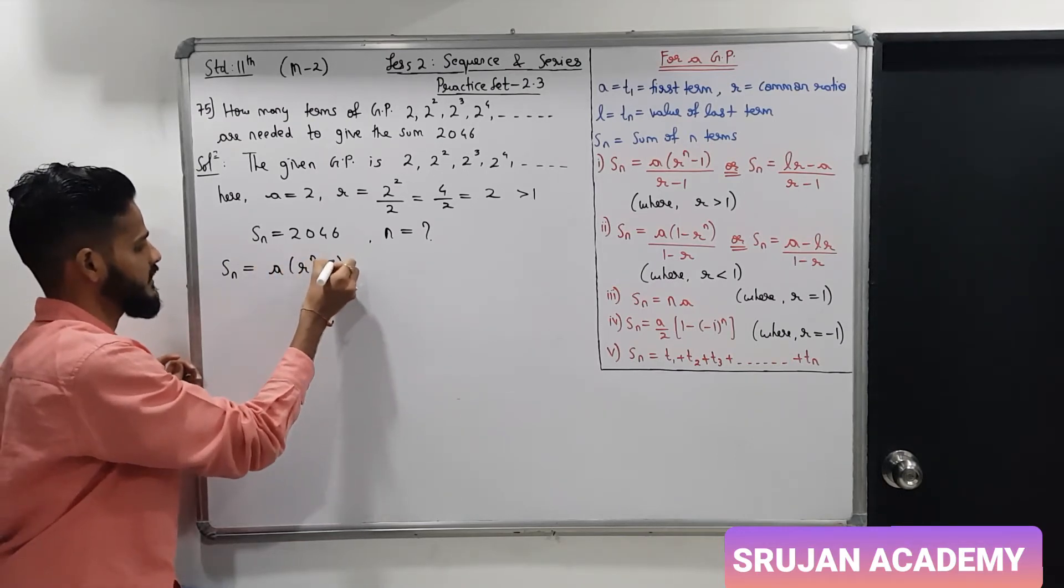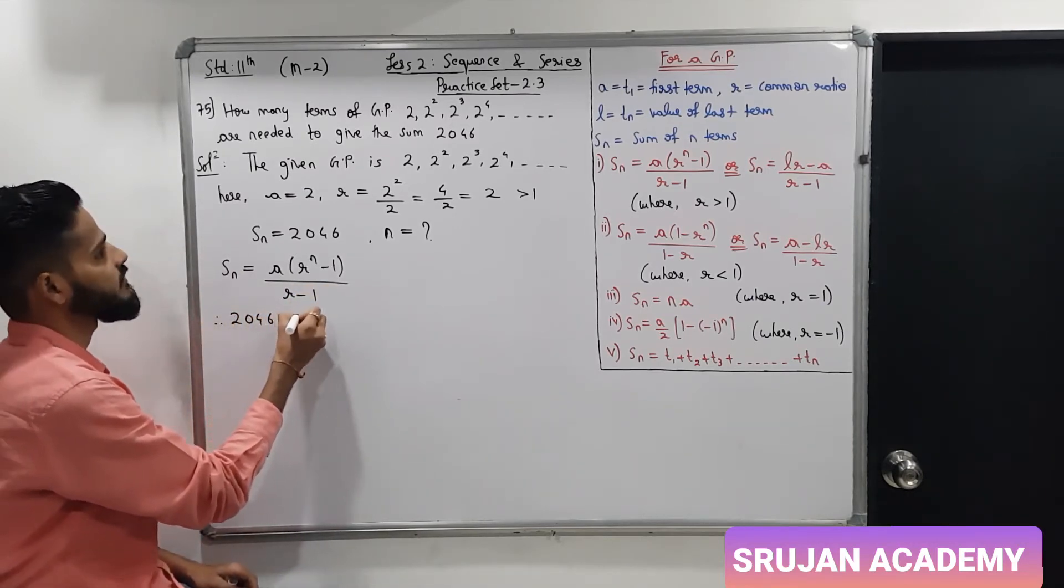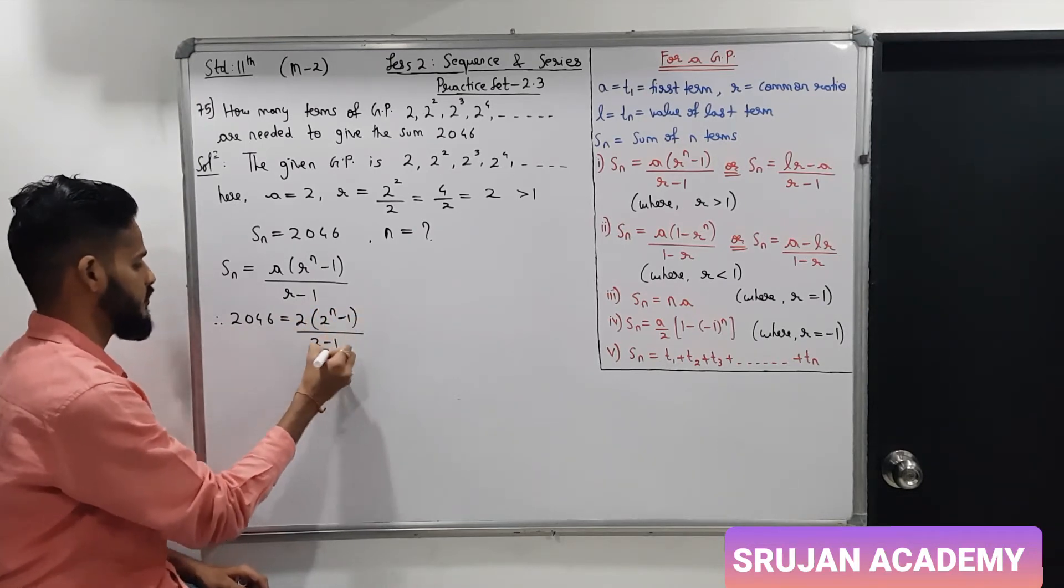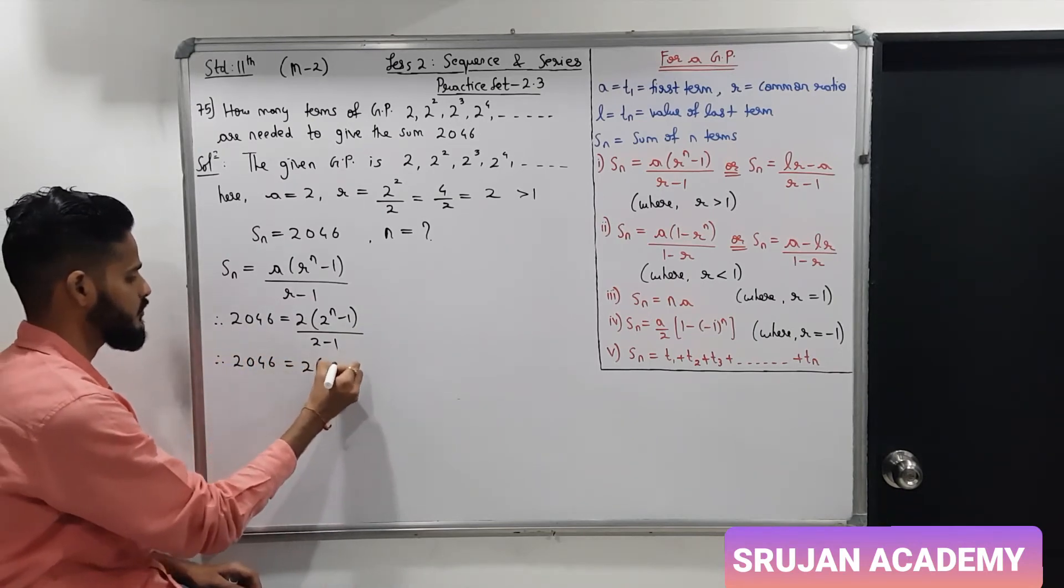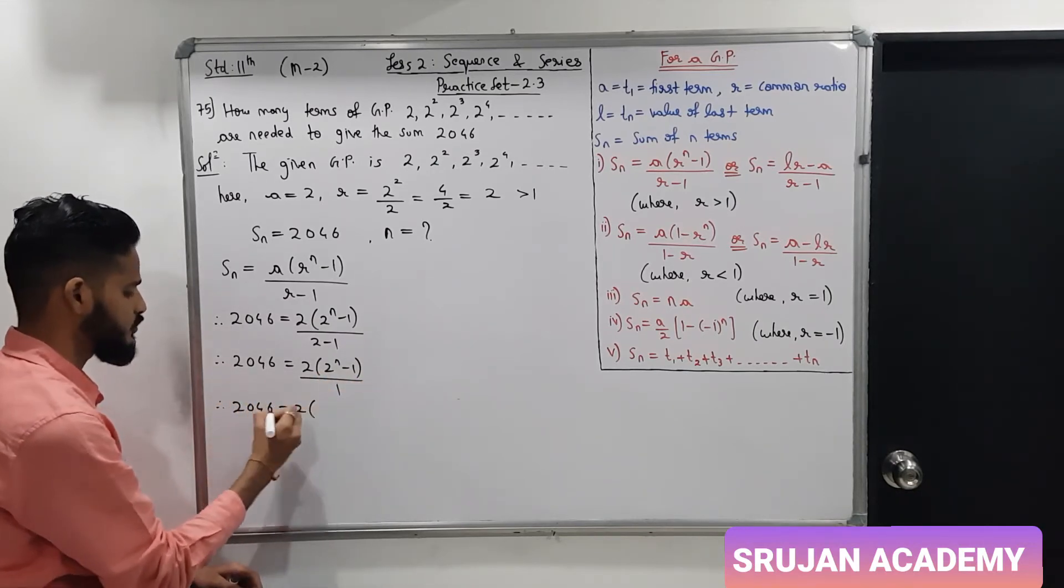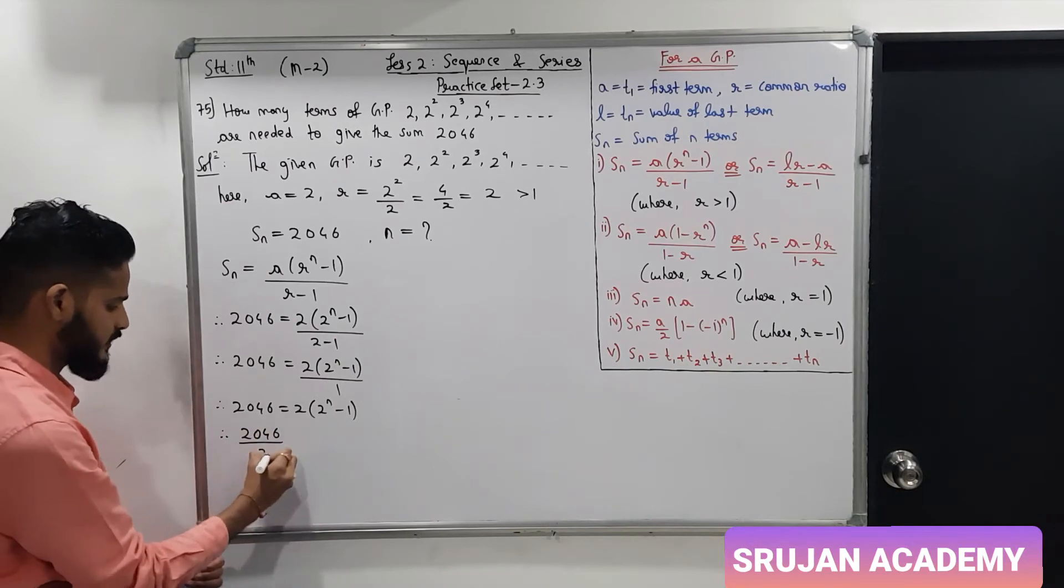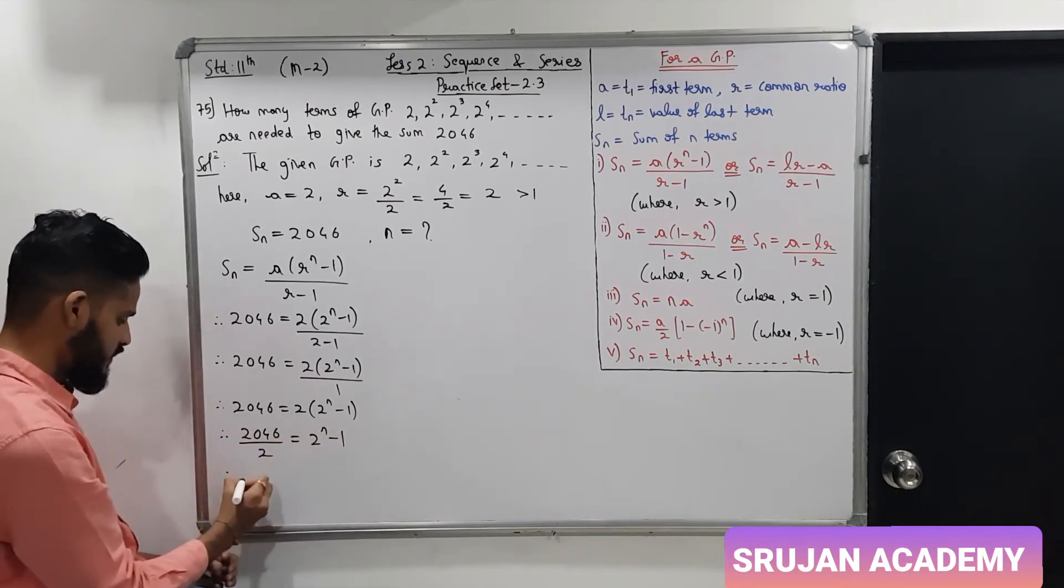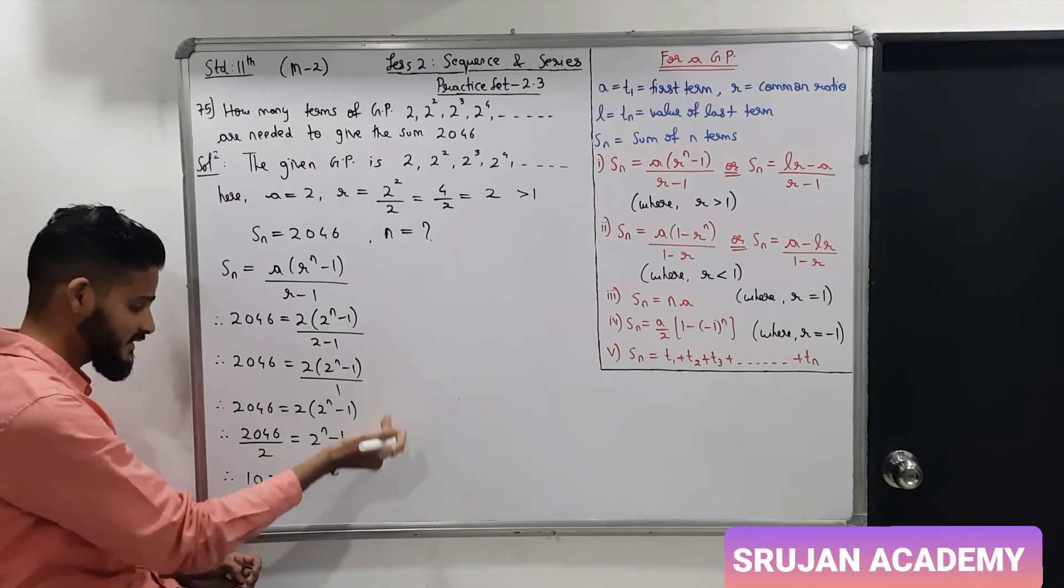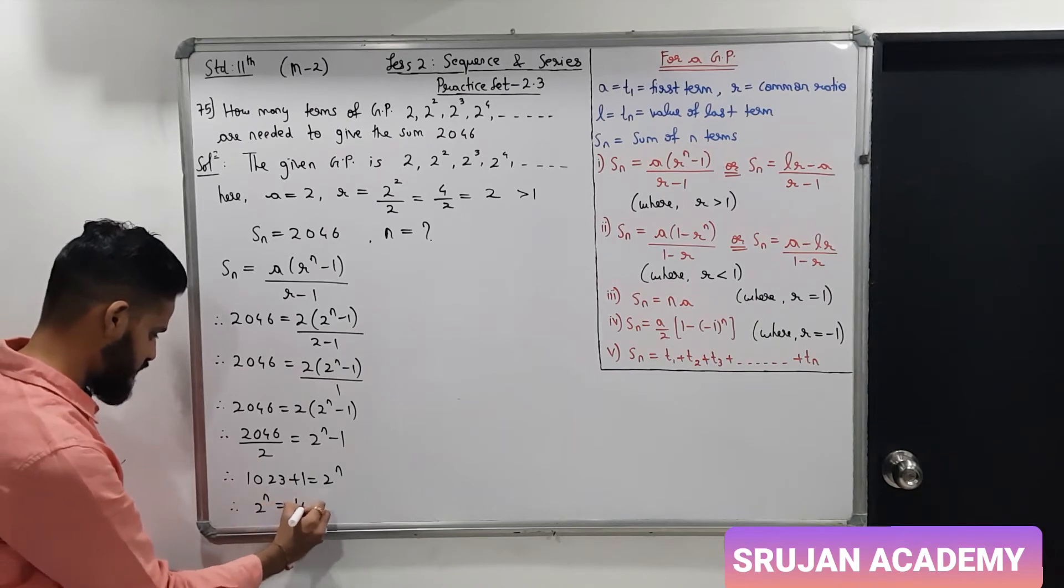So 2046 is equal to a is 2, R is 2 raise to n minus 1 upon 2 minus 1. So this is 2046 equals 2 into 2 raise to n minus 1 upon 1. So 2046 equals 2 into 2 raise to n minus 1.